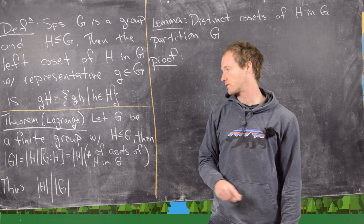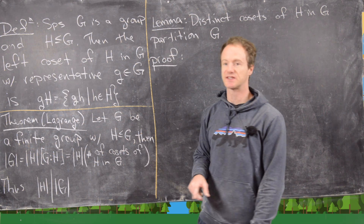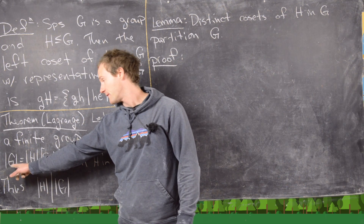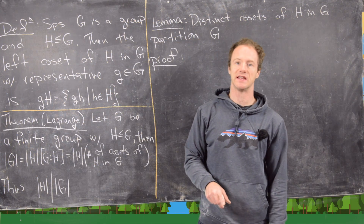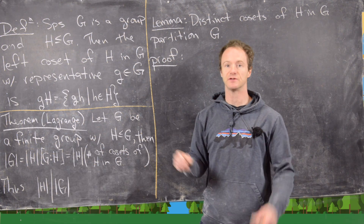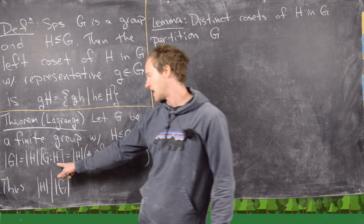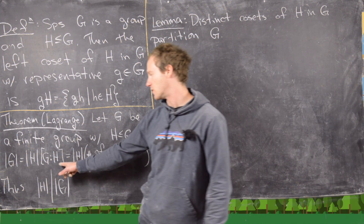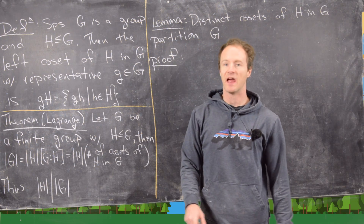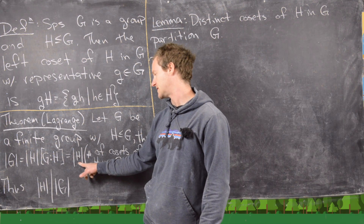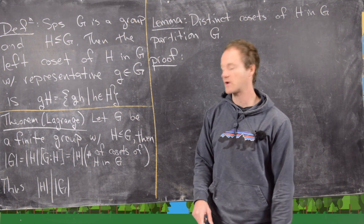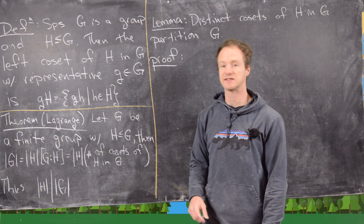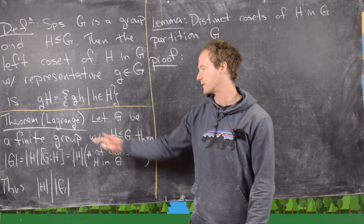The theorem we want to prove is: let G be a finite group and H a subgroup of G. Then |G| equals |H| times the index of H in G, denoted [G:H], which equals |H| times the number of cosets of H in G. There will be a certain number of cosets you can form from H, and that's what we call the index.